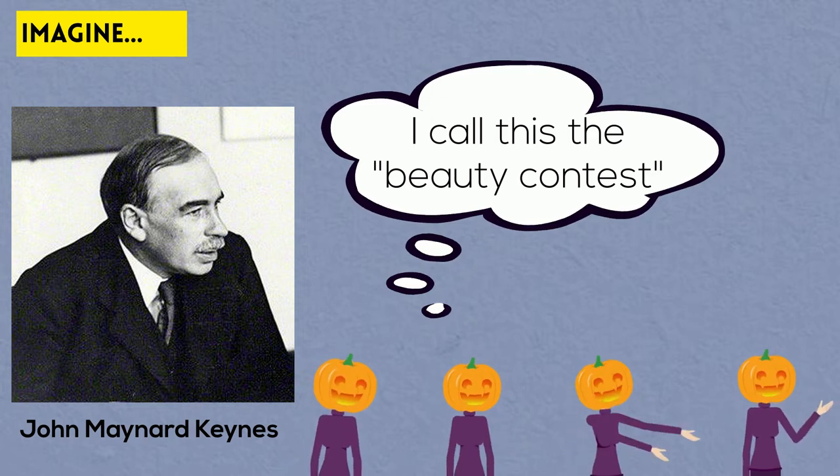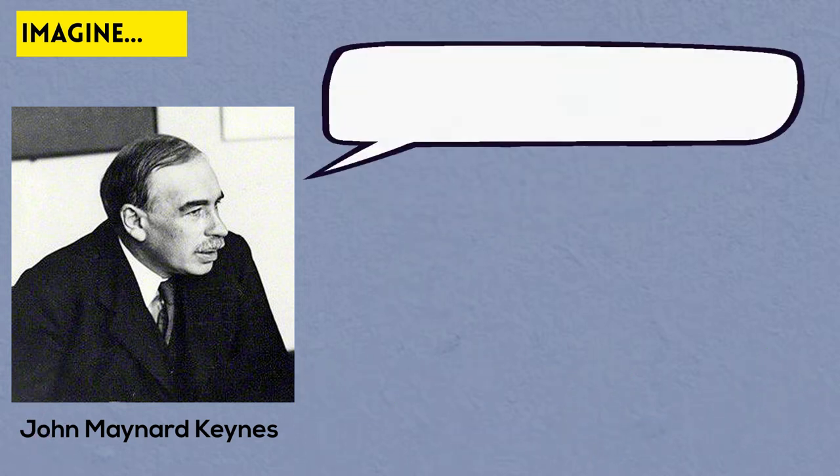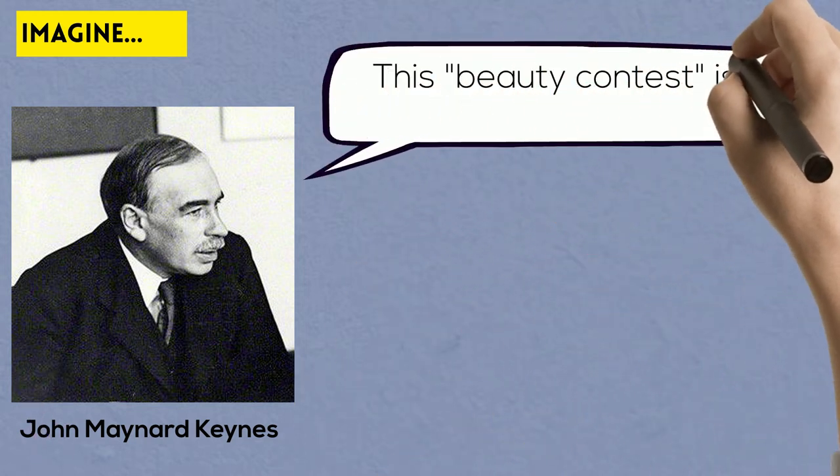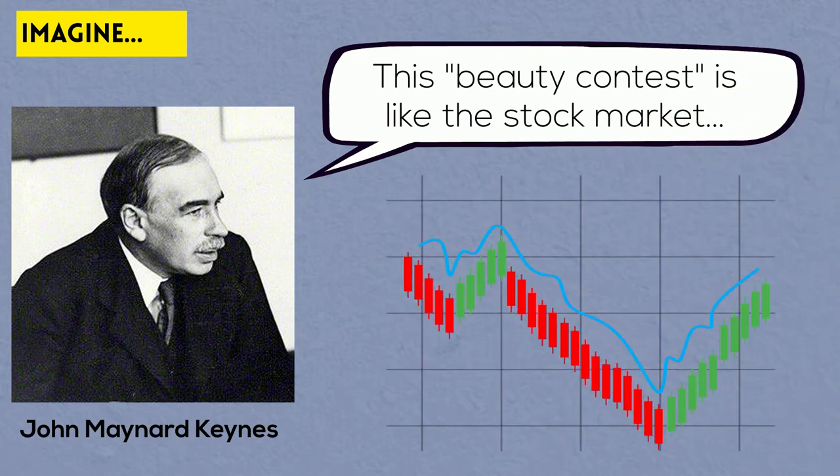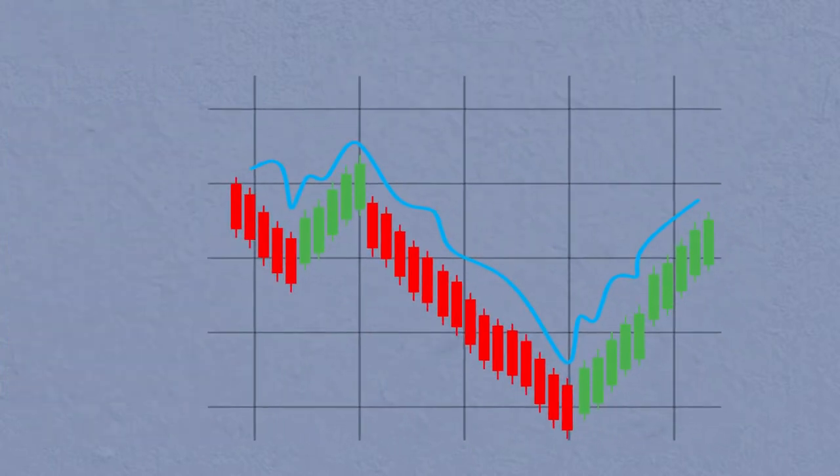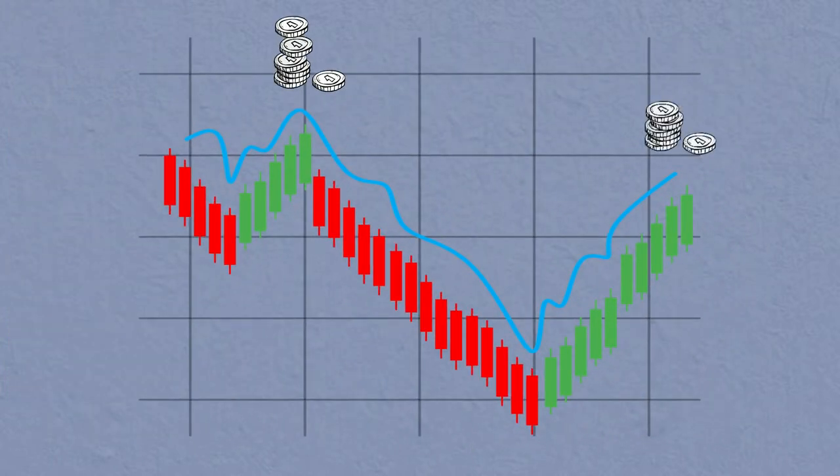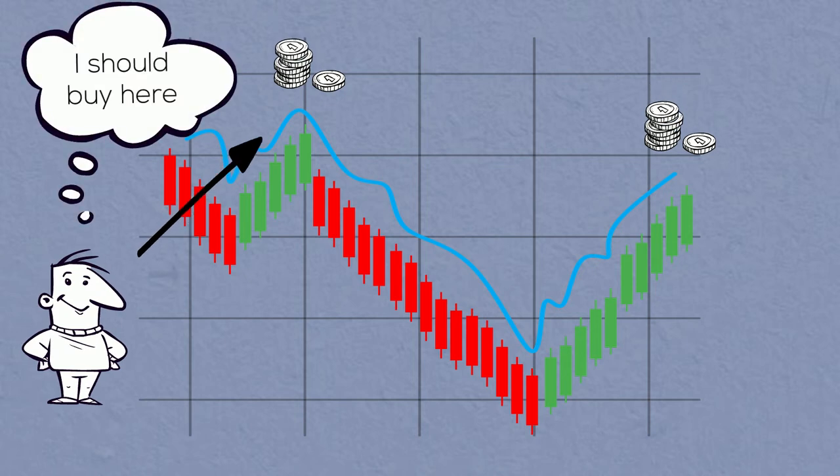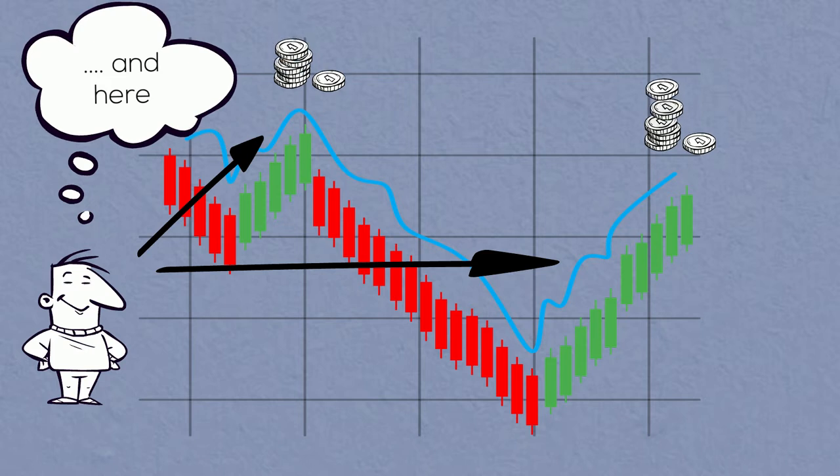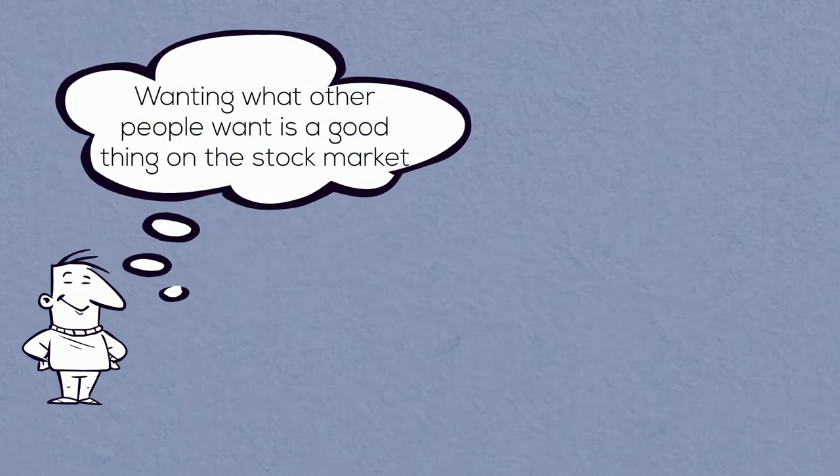He said that the beauty contest is very similar to what happens on the stock market. To beat the market, what you have to do is buy stocks not of the companies that are actually likely to grow and make money, but those companies that most investors will be willing to buy for whatever reason. If investors want to buy a certain stock, the price of this stock will go up, and if you're able to predict what other people will be trying to buy, then you can buy it now and sell later when it becomes expensive. In other words, wanting what other people want is a good thing both in the beauty contest and on the stock market.